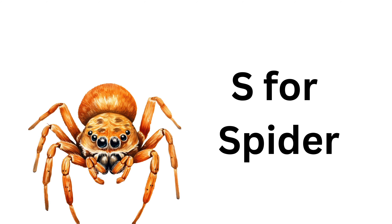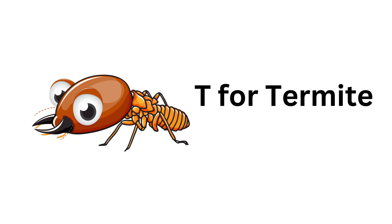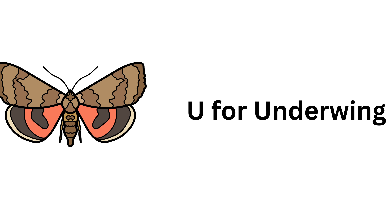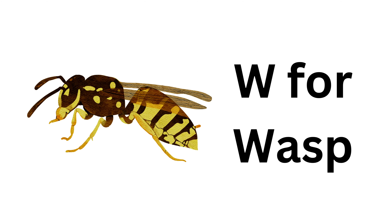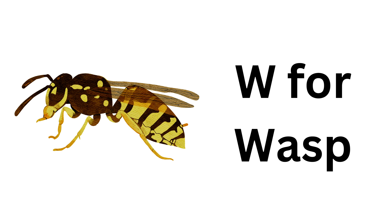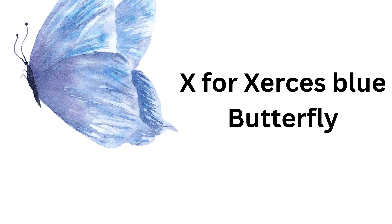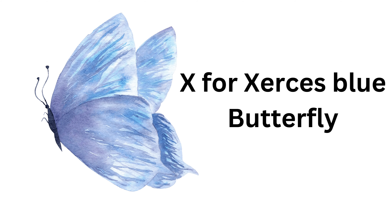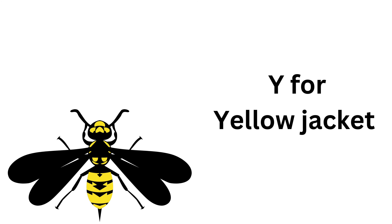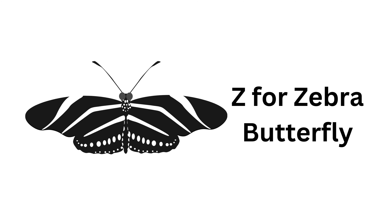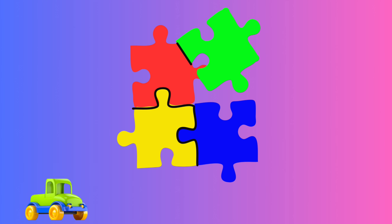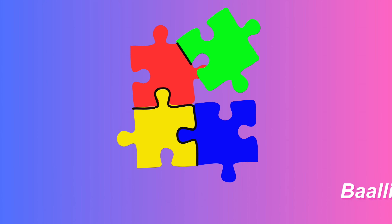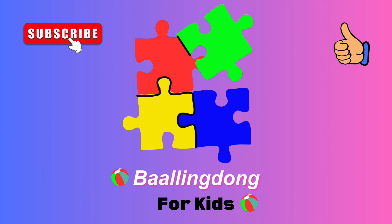T for Termite. U for Underwing. V for Velvet Ant. W for Wasp. X for Zizeeria's Blue Butterfly. Y for Yellow Jacket. Z for Zebra Butterfly.